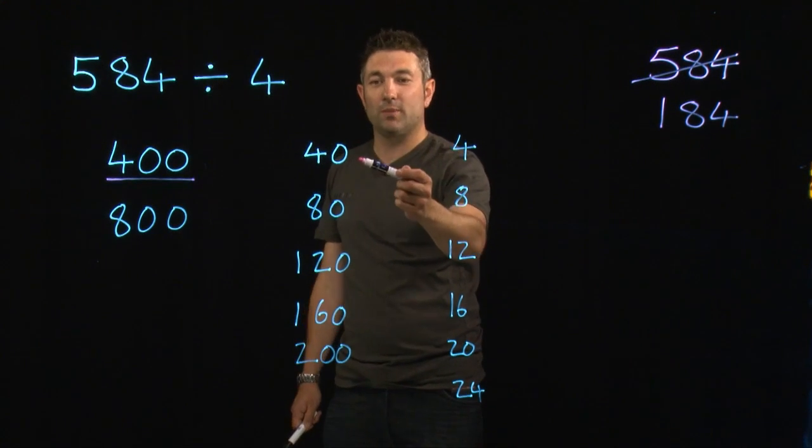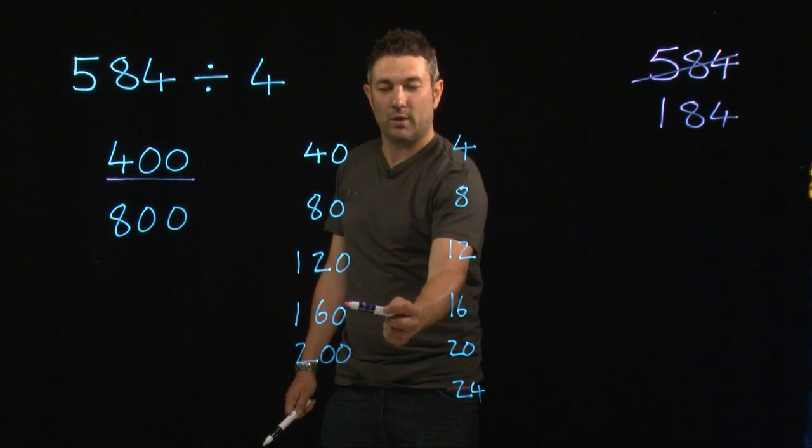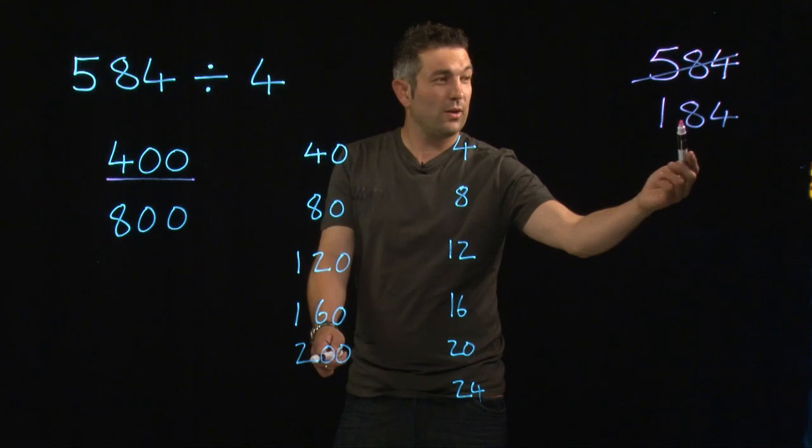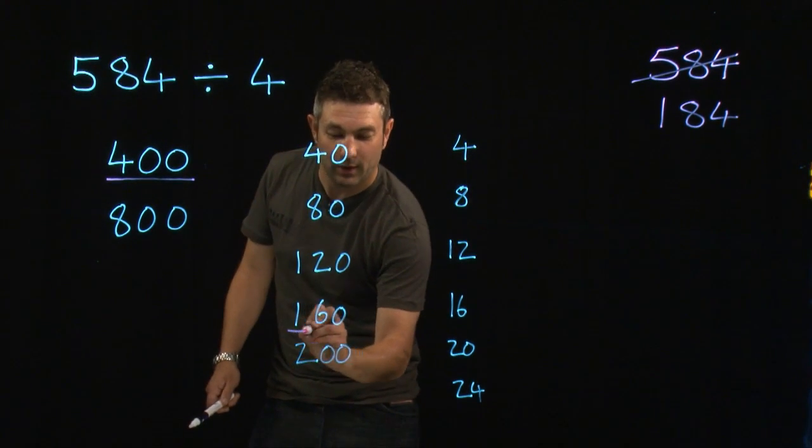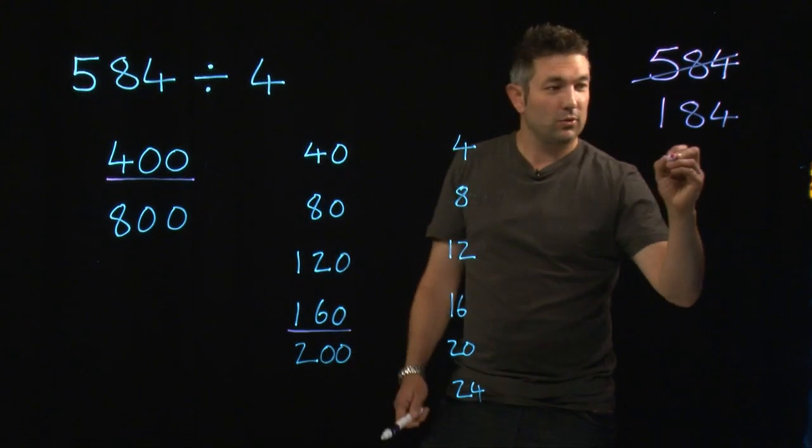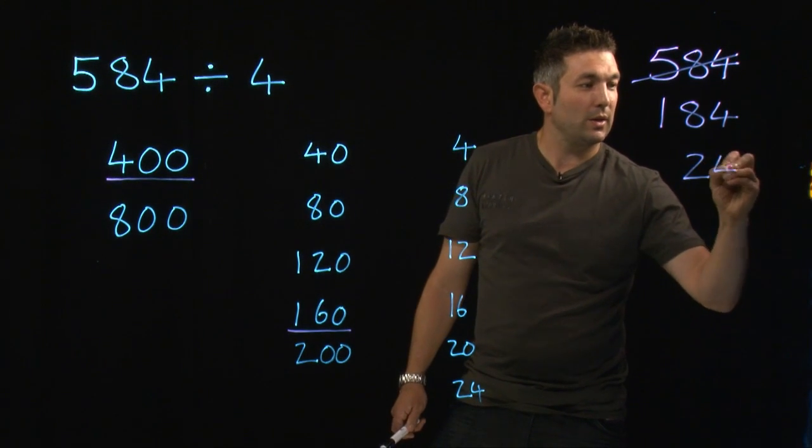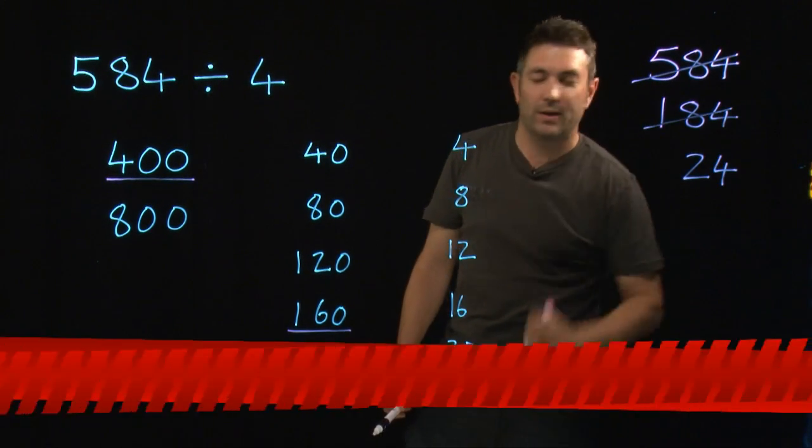Now, if I look at my 40 times table, 40, 80, 120, 160. 200 is bigger than that, so I don't need it. So I'm going to underline the 160. Take 160 off of that. I get 24. Cross that out. I don't need it.